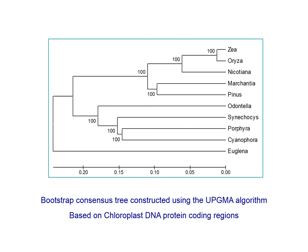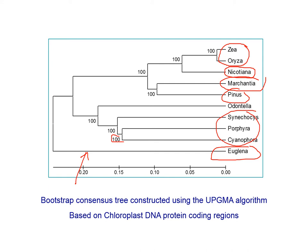For the UPGMA tree, a similar bootstrapping method is applied. You can see Euglena clearly as an outgroup because it is the earlier ancestor. The rest have resolved according to their evolutionary status — Oryza and Zea mays at one level, Nicotiana, Pinus, Marchantia, and the macroalgae at their respective positions, and Euglena as the outgroup. There is a high degree of confidence, with branches at 100% confidence level.